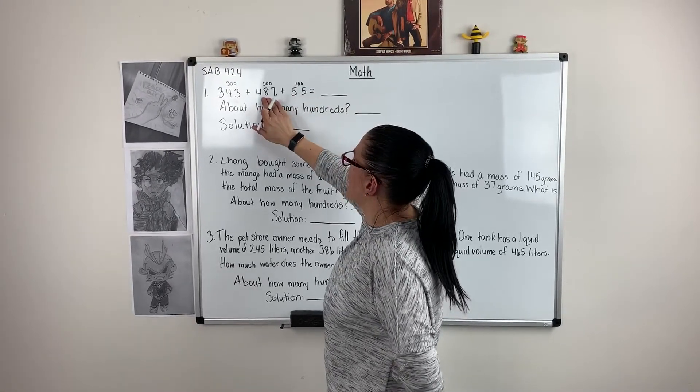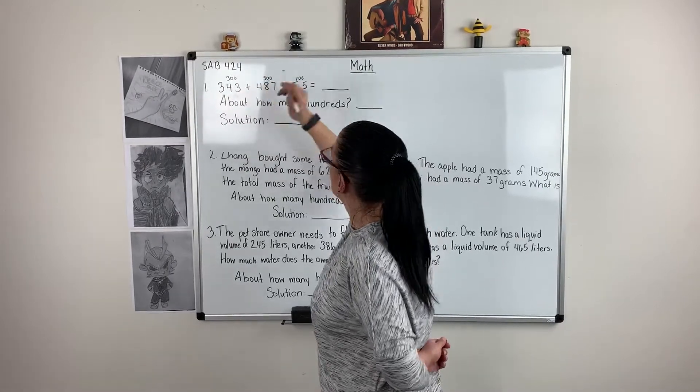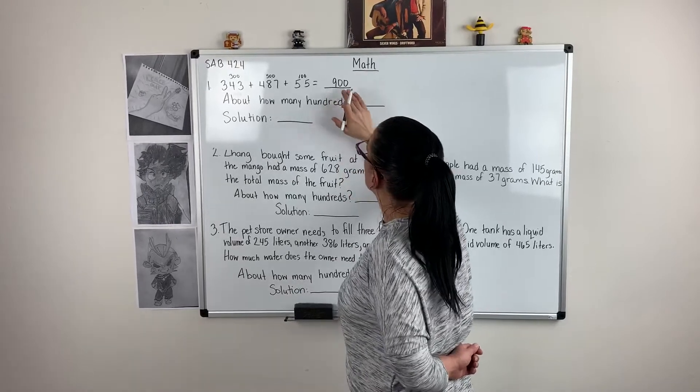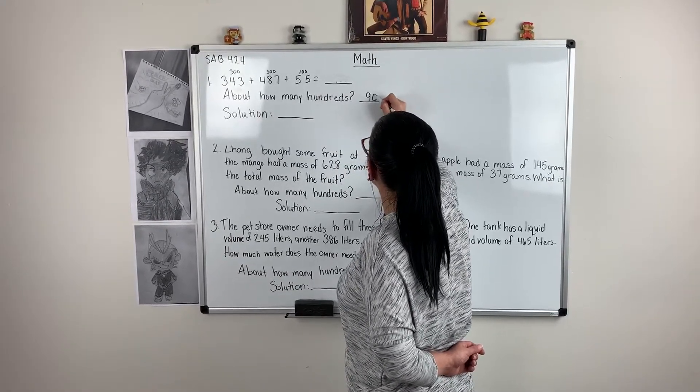So 300 plus 500 plus 100 gives me about 900. I should put it down here: about how many hundreds? So it should be about 900.